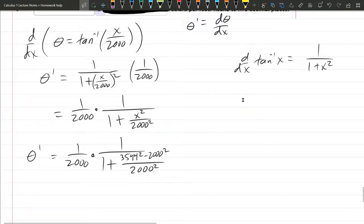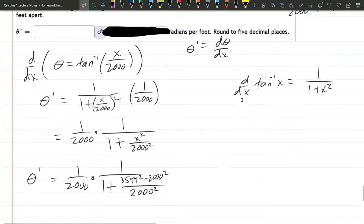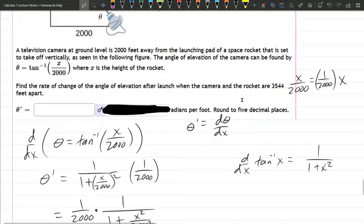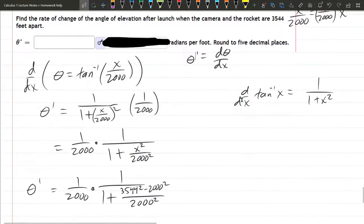Okay, so this should be the answer here. You could plug this in, but it does say round to five decimal places. So they are probably expecting a decimal. So I'm not going to type this into a calculator. You can do that.